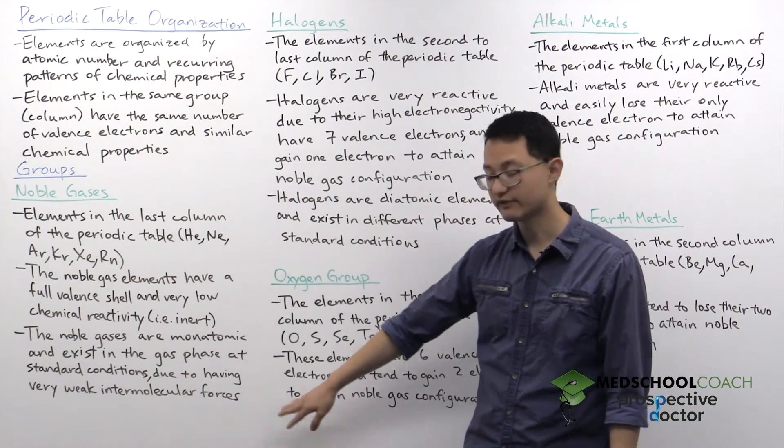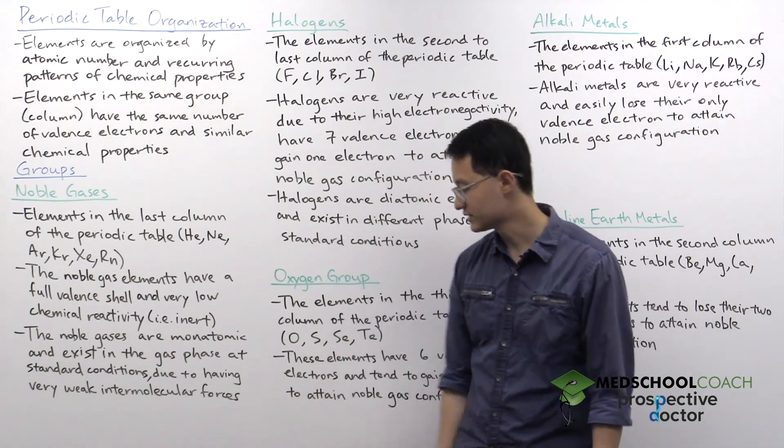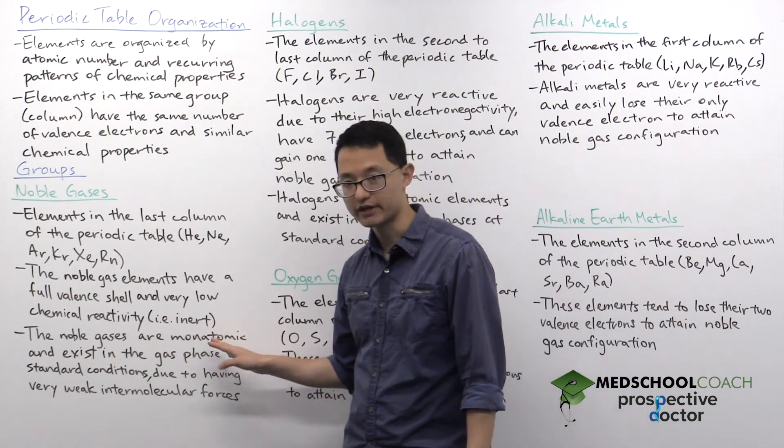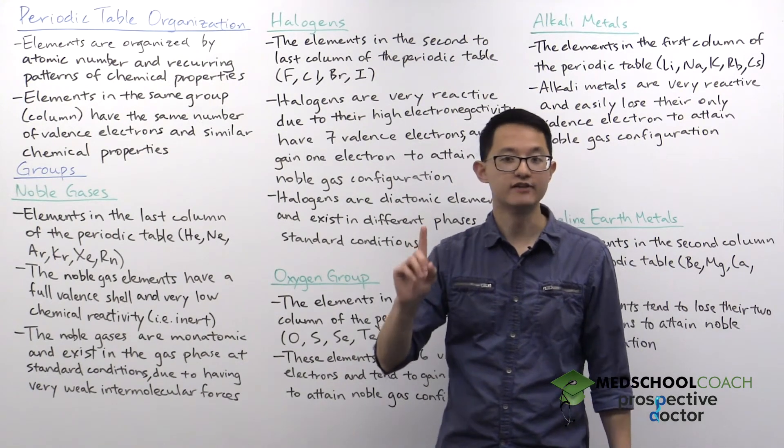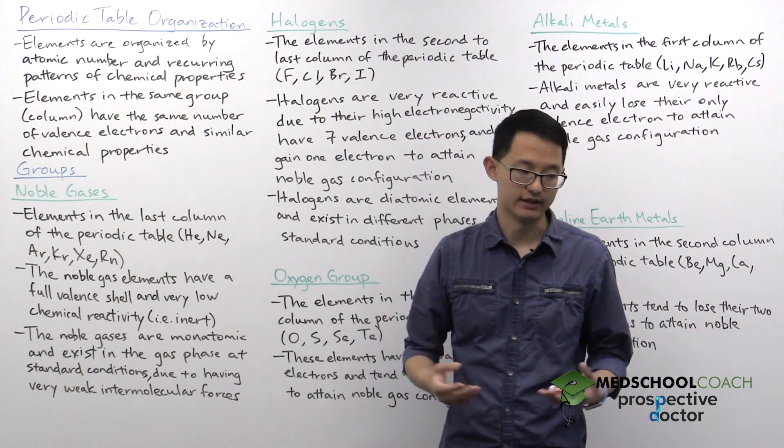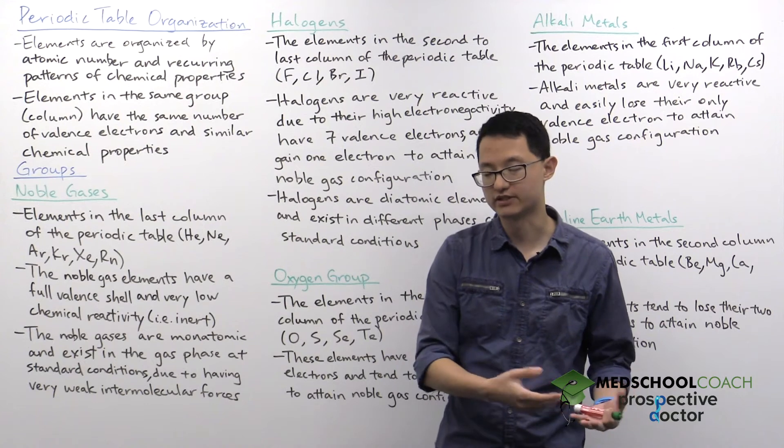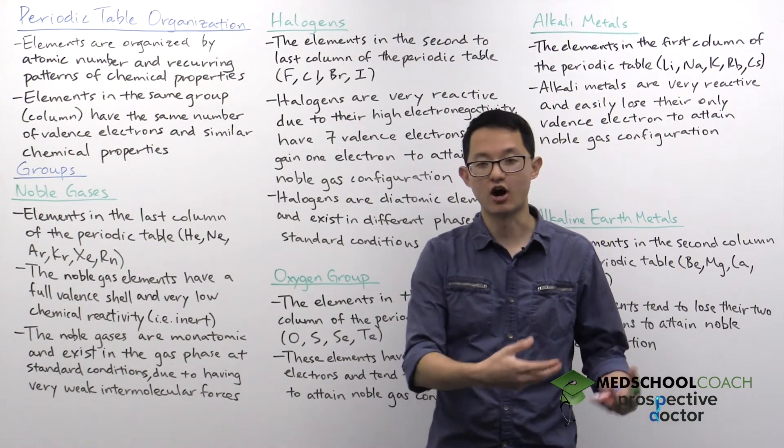Now in terms of the physical properties for noble gases, they are monatomic, which means they exist naturally as individual atoms. They don't exist in diatomic states, for instance, bound to another copy of itself.